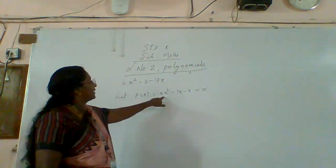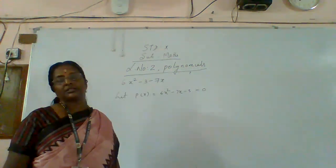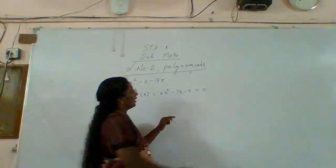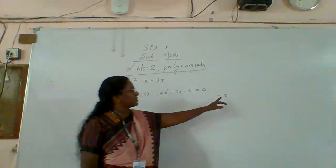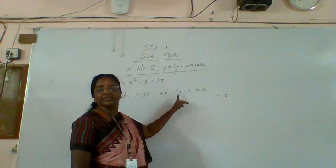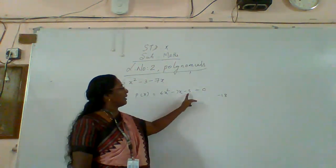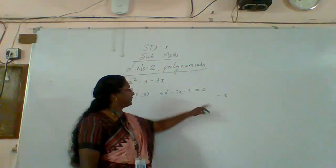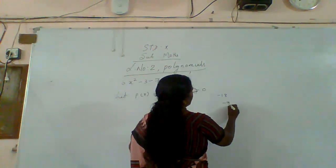Arrange the terms: first the x square term, then the next term, then the constant term. So six x square minus seven x minus three is equal to zero. For factoring: six x into minus three equals minus eighteen. Find out two numbers whose product is minus eighteen and difference is seven. The numbers are minus nine and plus two: minus nine plus two equals minus seven, and minus nine into two equals minus eighteen.